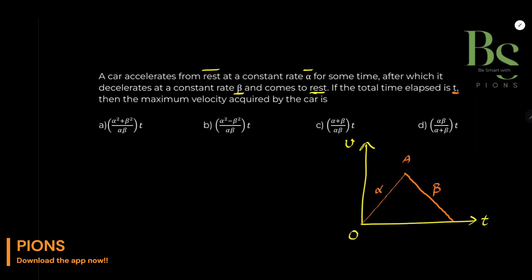Maximum velocity कितनी हो — देखो, graph पे थोड़ा focus करते हैं। अगर car start हुई O से और A पे गई, तो A पे इसके पास maximum speed थी। इसके बाद velocity कम हो रही है time के साथ धीरे धीरे, और speed घटते घटते 0 हो गई। तो velocity at A कितना है — हमारा v_max।